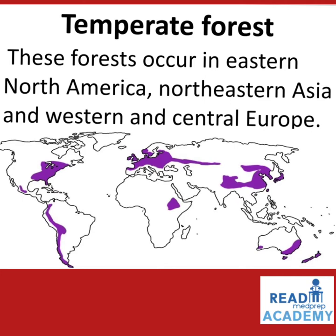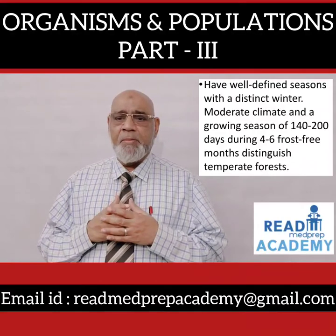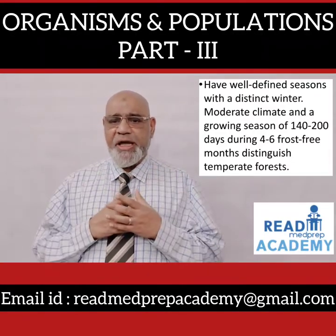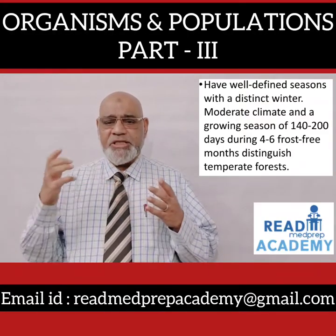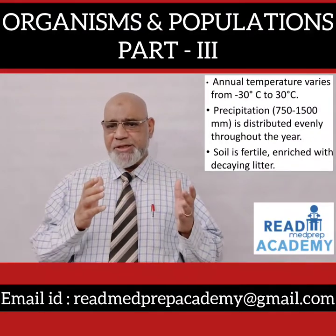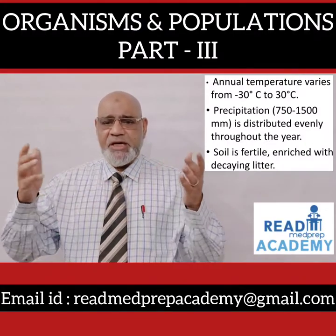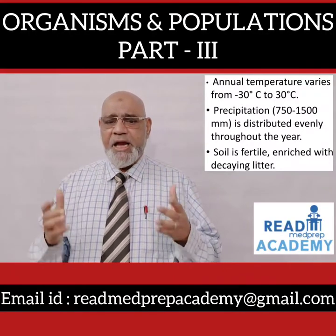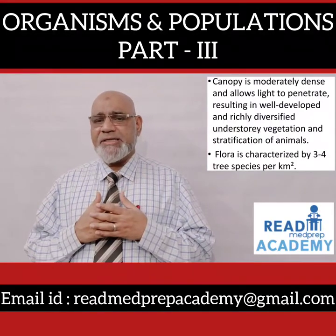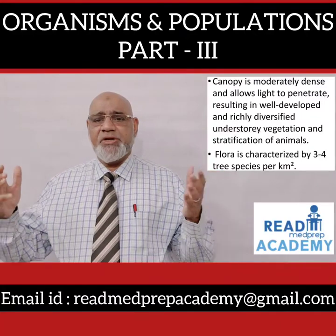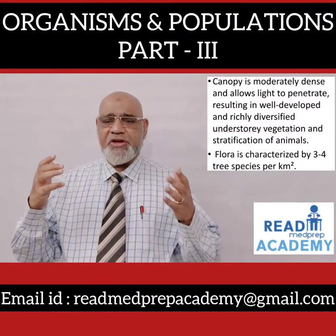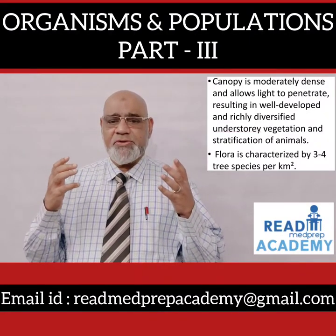Temperate forests occur in eastern North America, northeastern Asia, and western and central Europe. They have well-defined seasons with a distinct winter, moderate climate, and a growing season of 140 to 200 days during 4 to 6 frost-free months. Annual temperature varies from minus 30 to 30 degrees centigrade. Precipitation of about 750 to 1,500 mm is distributed evenly throughout the year. Soil is fertile, enriched with decaying litter. Canopy is moderately dense, allowing light to penetrate, resulting in well-developed and richly diversified understory vegetation. Flora is characterized by 3 to 4 tree species per square kilometer.